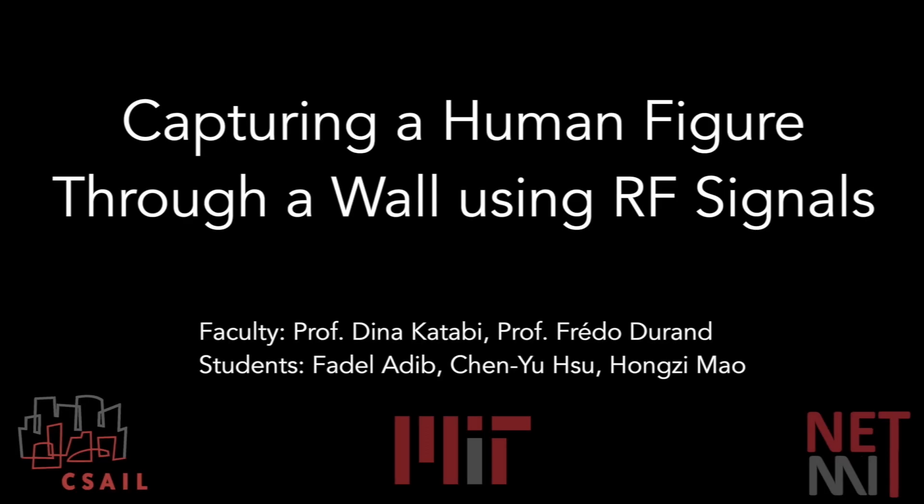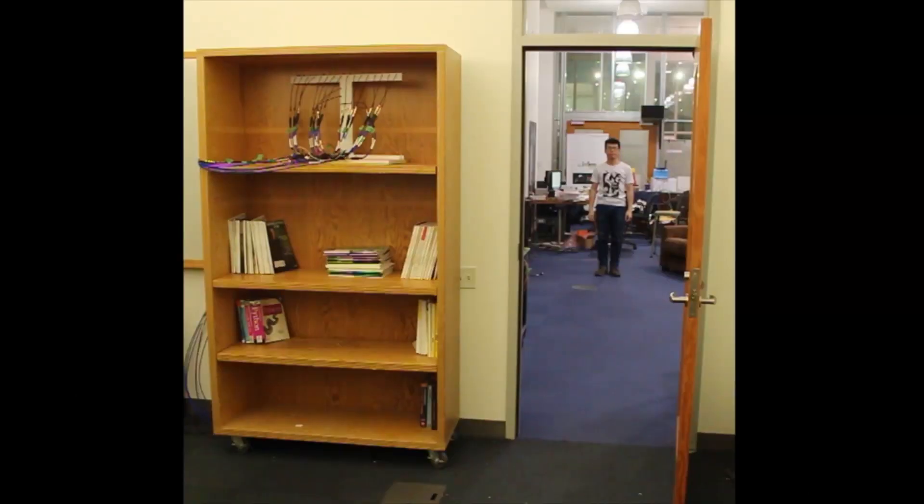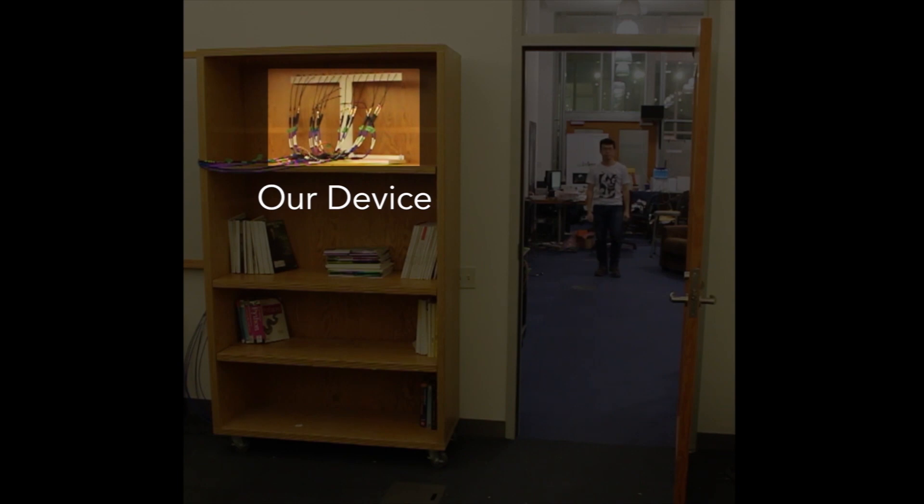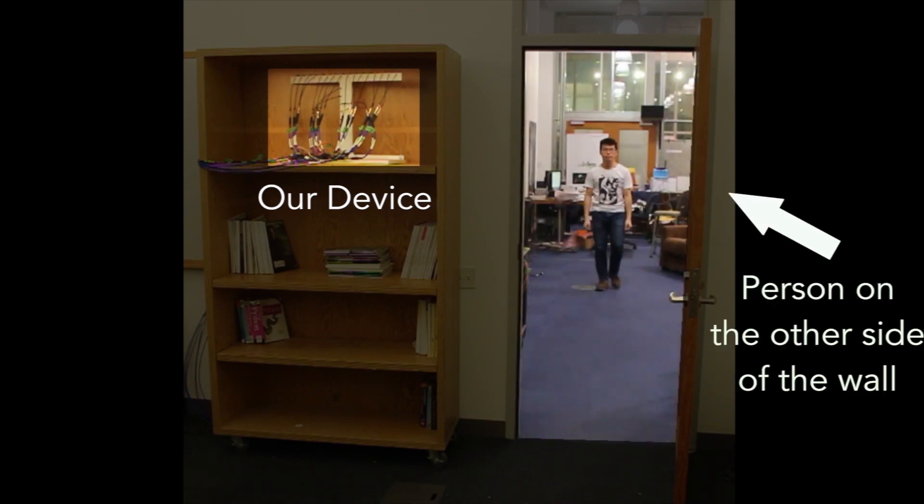This video describes a device that can capture the human figure through walls using RF signals. We place our device behind the wall and it can see the silhouette of a person who walks in an adjacent room.